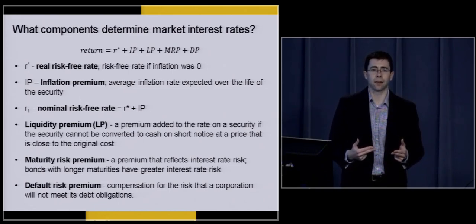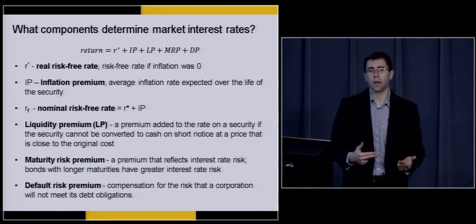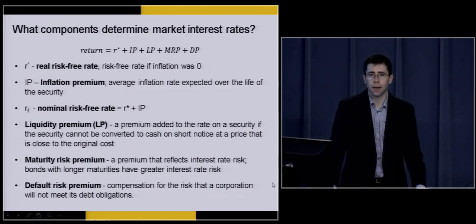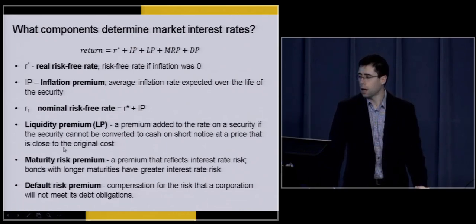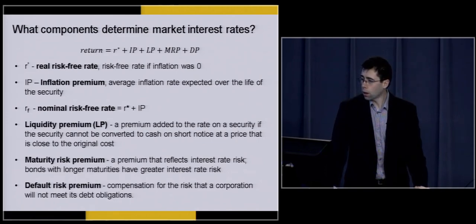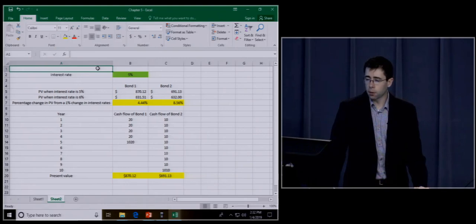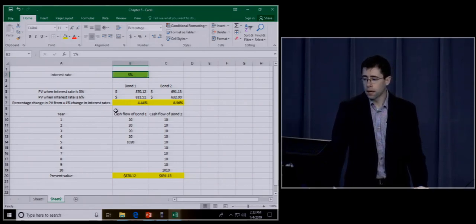Longer-term assets are typically associated with greater maturity risk. To illustrate, I've created an example in Excel. I've set a specific interest rate of 5% and created two bonds: Bond 1 matures in five years and Bond 2 matures in 10 years. If I want to illustrate the maturity risk premium, I calculate the price of each bond as I adjust interest rates. We'll talk about how changes in interest rates affect bond prices in a later chapter, but I'm showing you this now so you can get a sense of why we care so much about time to maturity.